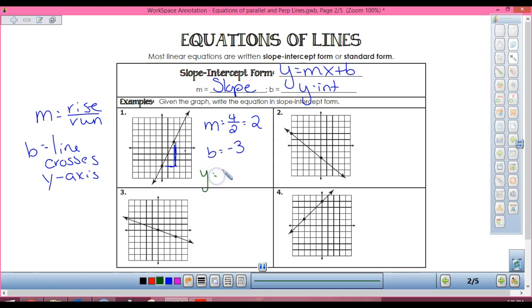My b, where does this cross the y-axis? Negative three. So then let's write the equation of my line. Y equals m, two, x, minus three.